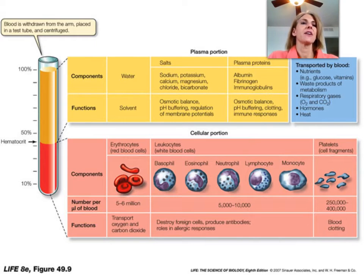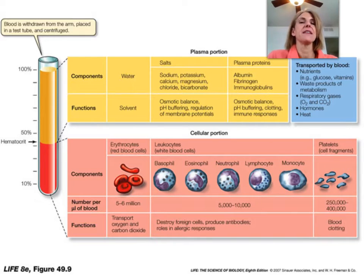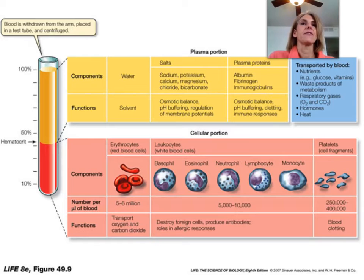I picked this graphic because it includes the different types of cells as well as what they do. You have your centrifuge tube over on the left. You can see the plasma at the top — the yellowish portion, more than half, so 55%. The red portion at the bottom are your erythrocytes, at 45% of your blood. The Buffy coat, made up of white blood cells and platelets, is less than 1%. The majority of your blood is plasma, and then the majority of plasma is water.